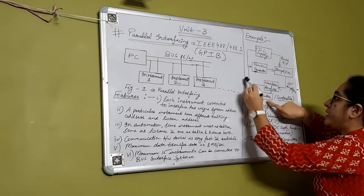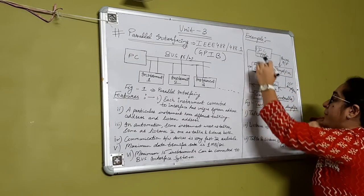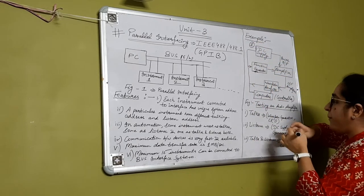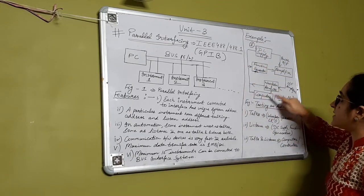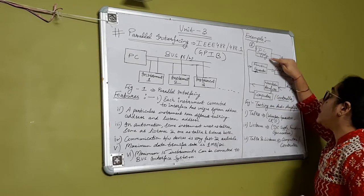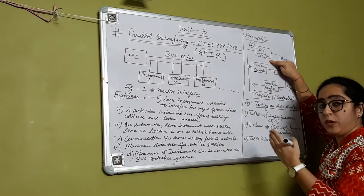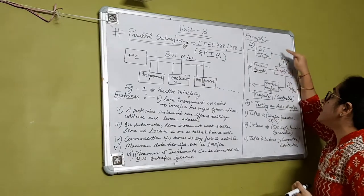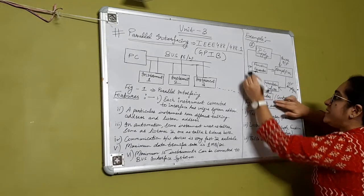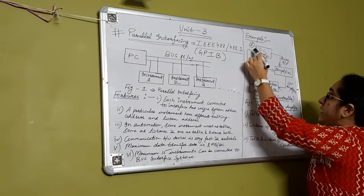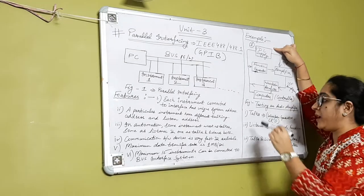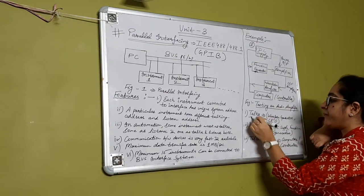First, the computer initializes the process and sends the command to the DC supply. The computer initiates the process, sends the command to the DC supply system to set the voltage to a desirable range, and gives the supply to the amplifier. At that time, the DC supply is acting in listener mode.